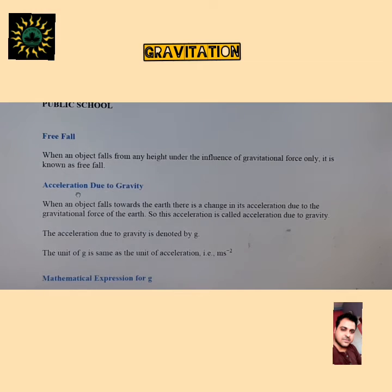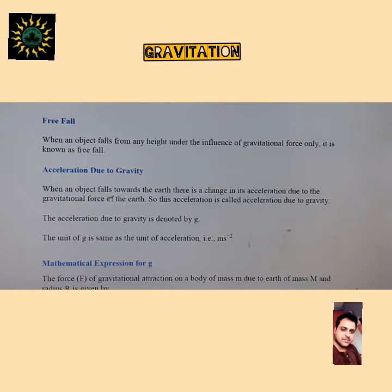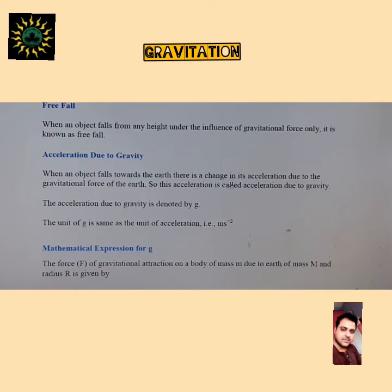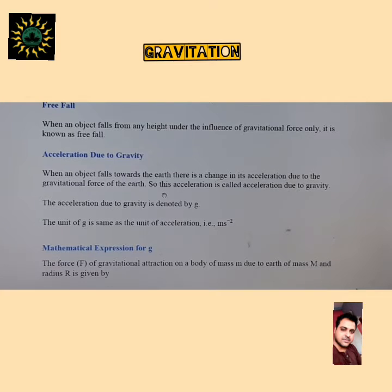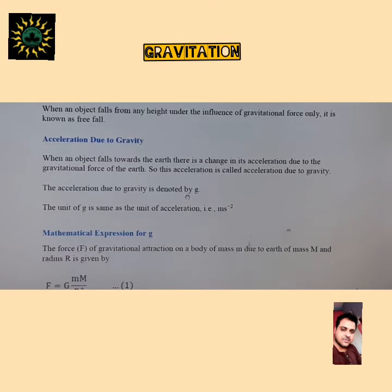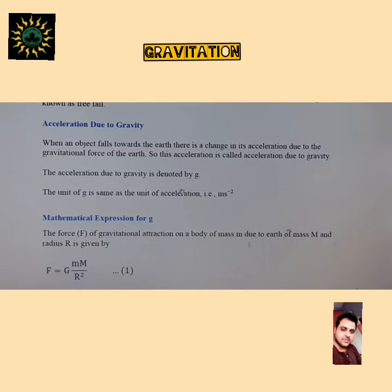Acceleration due to gravity: when an object falls towards the Earth, there is a change in its acceleration due to the gravitational force of Earth. When a body falls under gravitational acceleration, the velocity gradually starts to increase, so there exists an acceleration. This acceleration is called the acceleration due to gravity, denoted by small g. Its unit is the same as normal acceleration — meter per second square in SI units.